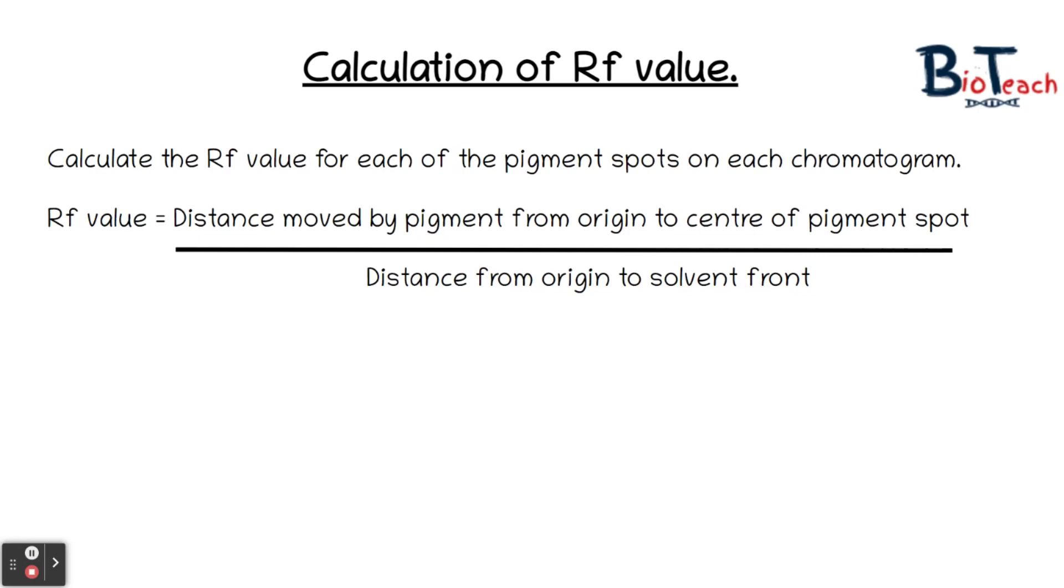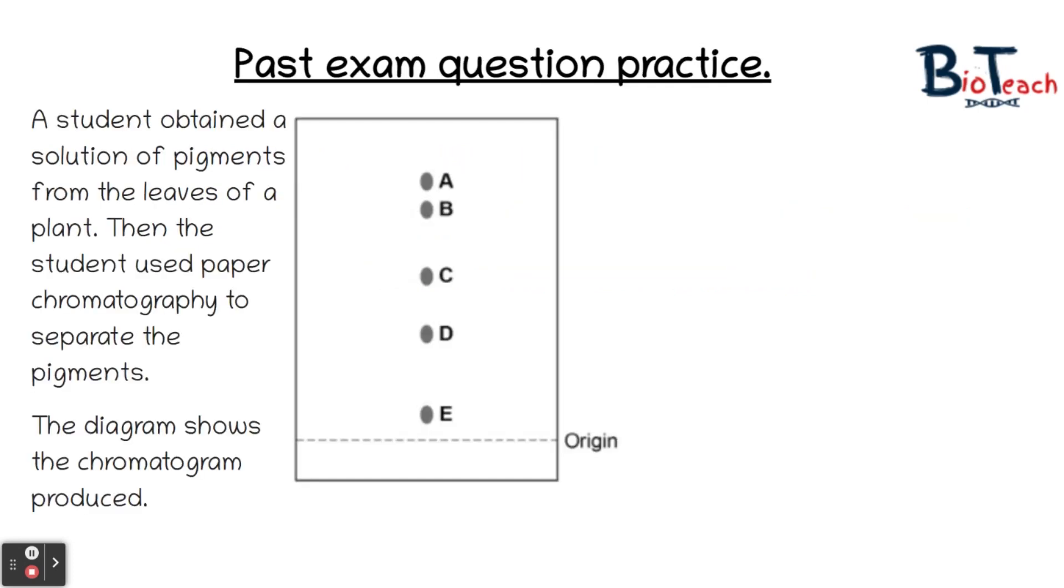So the easiest way to explain how to do this is really just to look at some past exam questions. It says there the student obtained a solution of pigments from the leaves of the plant and the student used paper chromatography to separate the pigments. The diagram shows the chromatogram produced, and you can see there you've got the line of origin and you've got spots A to E that have been identified on this chromatogram. The first question is asking explain why the student marked the origin using a pencil rather than using ink. So if you pause the video now to have a think about why they use pencil and then we'll go through the answer.